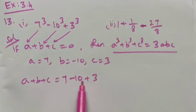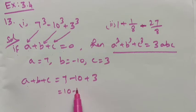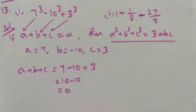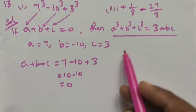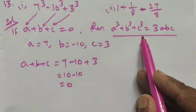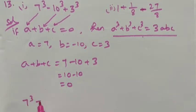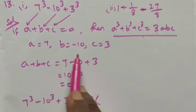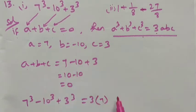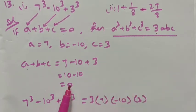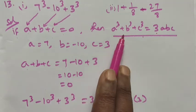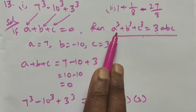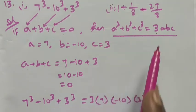Sum: 7 plus 3 is equal to 10, minus 10 is equal to 0. So the sum becomes 0. This means we apply the formula: 7 cube minus 10 cube plus 3 cube is equal to 3 times abc, where a is 7, b is minus 10, c is 3.